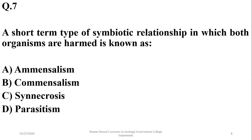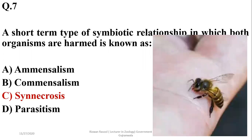Question seven: a short-term symbiotic relationship in which both organisms are harmed is known as synnecrosis — option C. For example, when a honey bee stings, it does so at the cost of its own life. Both the honey bee and the victim are harmed.